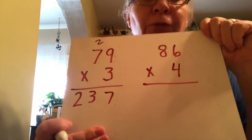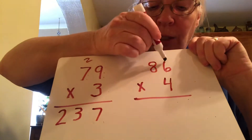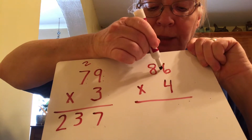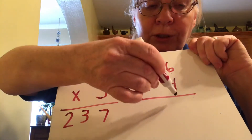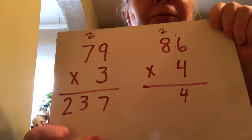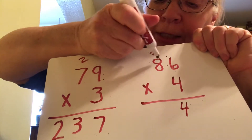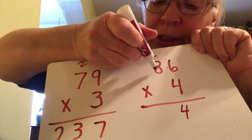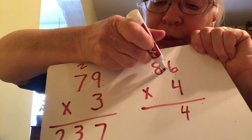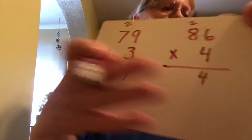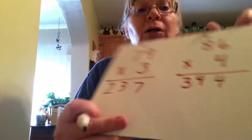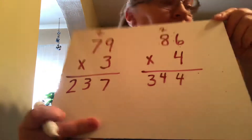The next problem is 86 times 4. First we do 4 times 6: 4, 8, 12, 16, 20, 24 — so the 4 goes down here and we carry the 2. Now we do 4 times 8: 4, 8, 12, 16, 20, 24, 28, 32 — plus our 2 gives us 34. So our answer is 344.